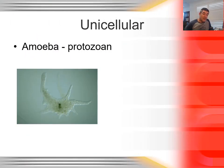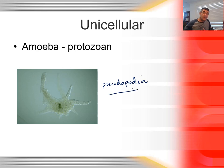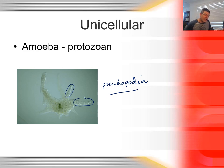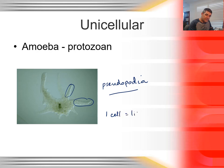The first of these groups is unicellular. A protozoan like an amoeba is a really good example of a unicellular organism. You'll notice its little pseudopodia — which literally means false feet — the little extensions that move the amoeba around. This particular cell is capable of finding and engulfing food, but all of its body processes occur within this one cell. Everything that makes it an organism is contained within just this one cell — one cell is life, and all life processes occur within it.